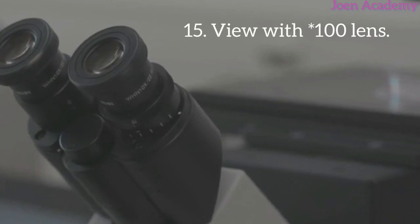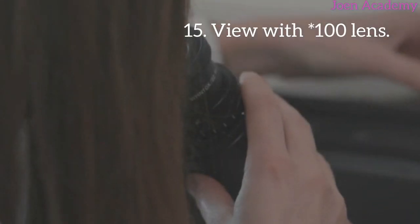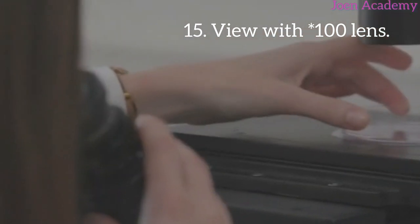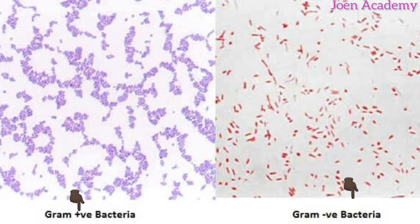After allowing it to dry, you now view it under your microscope with a lens of times 100. In the process of viewing it with your microscope, if you see a purple coloration, it is an indication that it is a Gram positive microorganism. But when you view it with the times 100 lens and you see a pink coloration, it is a Gram negative microorganism.